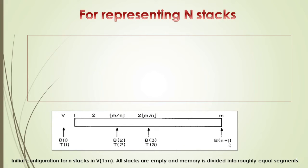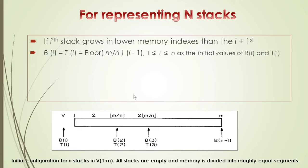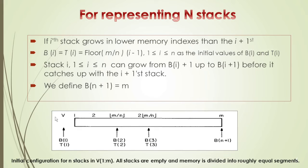We define B[N+1] as the base pointer sentinel equal to M. The initial value for each stack is B[i] = T[i] = floor(M/N) × (i−1). So for stack 1: 0 × M/N = 0; stack 2: 1 × M/N; stack 3: 2 × M/N; and so on. Stack i can grow from B[i]+1 up to B[i+1]. B[i+1] is the boundary of the next stack.